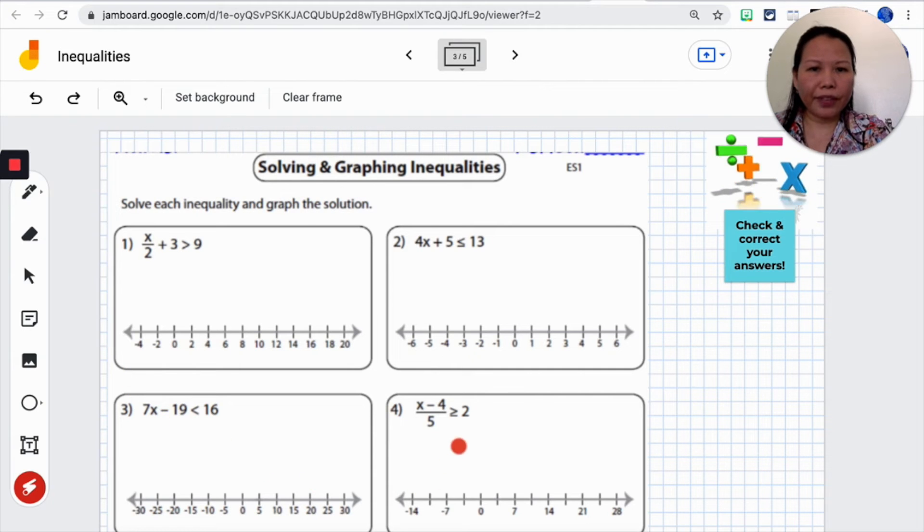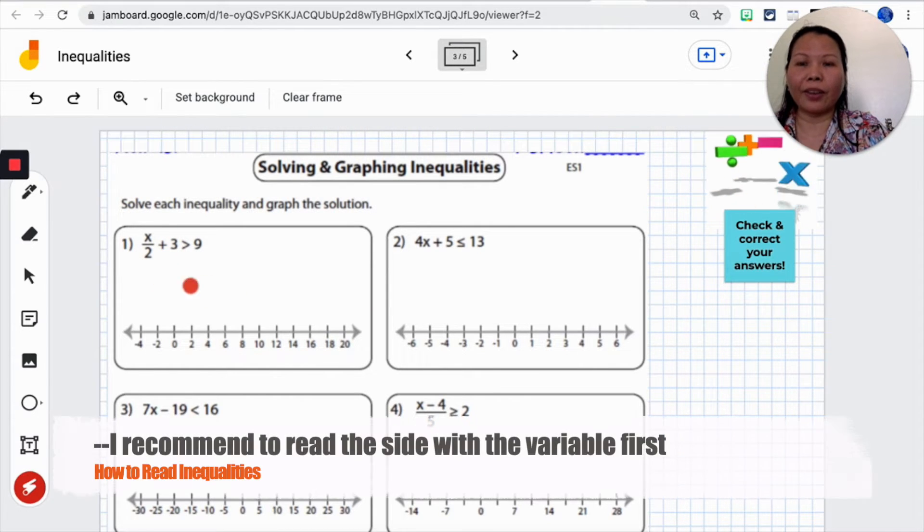Choose one of these four. We will do the one that you might think difficult. Number one. I always start with your variable whichever side it's on. Now x divided by 2 plus 3 greater than 9. What I will do is I will do the inverse and my farthest away friend is the plus 3.